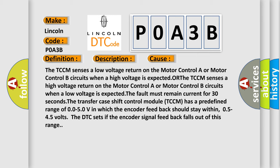The transfer case shift control module (TCCM) has a predefined range of 0.05 to 0.5V in which the encoder feedback should stay within. The DTC sets if the encoder signal feedback falls out of this range (0.5 to 4.5V).